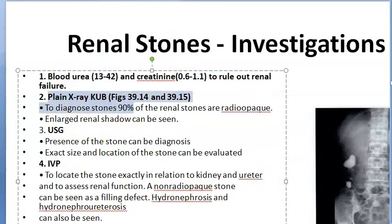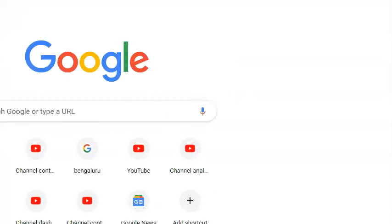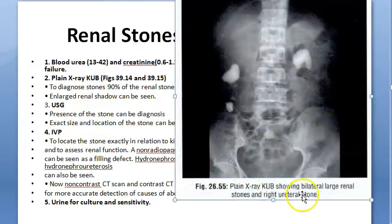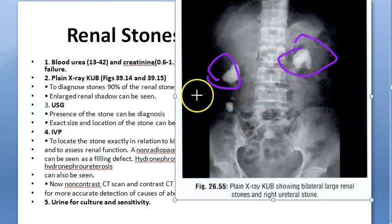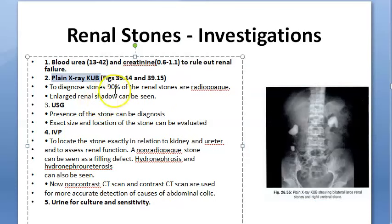Next, take a KUB X-ray — kidney, ureter, and bladder X-ray. On a plain KUB you can see bilateral large renal stones and right ureteral stone. About 90% of stones can be diagnosed because they are radio-opaque, but pure uric acid stones are radiolucent. You can also see an enlarged renal shadow.